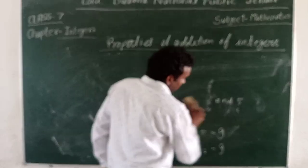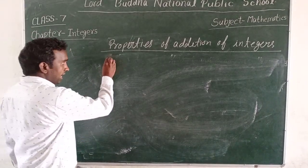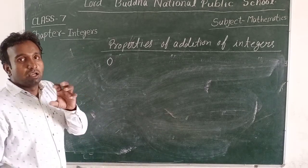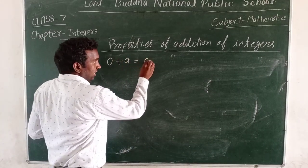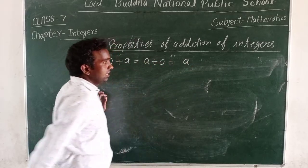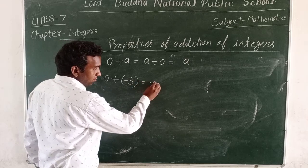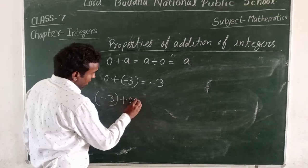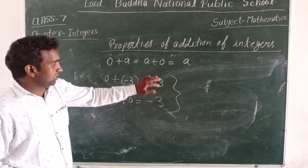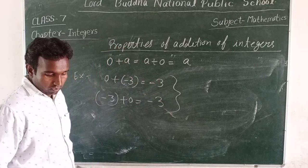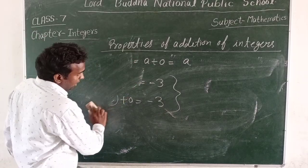The fourth property is the existence property of addition, also called the additive identity. When we add zero to any integer, the integer does not change — we get the integer itself. So zero added to any integer gives that same integer. This is property number four.